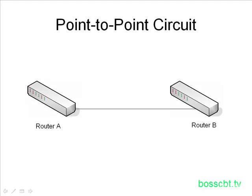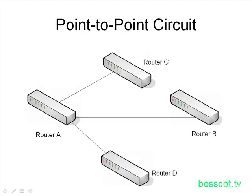This is a point-to-point circuit illustration, and it's really straightforward. We have router A and router B — those are our two points, and the circuit connects them. What if our company grows, though? So here we have not only router A and B, but we've added two new locations, C and D.